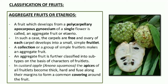The second type of fruit is the aggregate fruit or aeterio. A fruit which develops from a polycarpellary and apocarpous gynoecium — remember, in simple fruits it was syncarpous; here it is apocarpous — of a single flower is called an aggregate fruit. In such cases, the carpels are free and the ovary of each carpel develops into a small simple fruitlet. A collection or group of simple fruitlets makes an aggregate fruit.